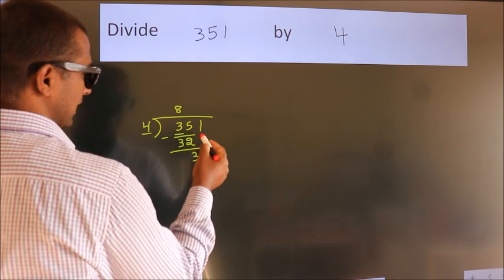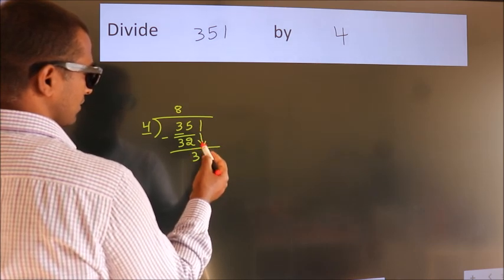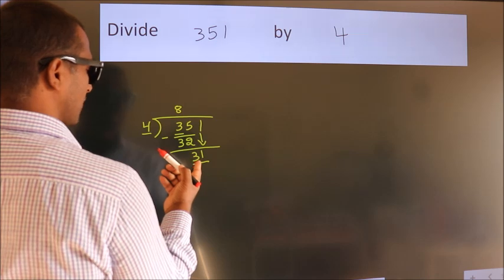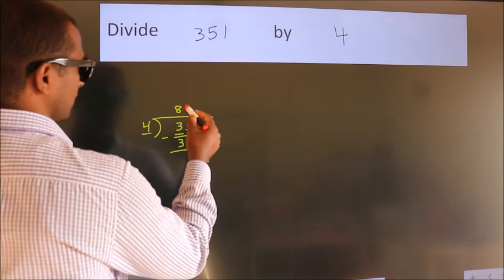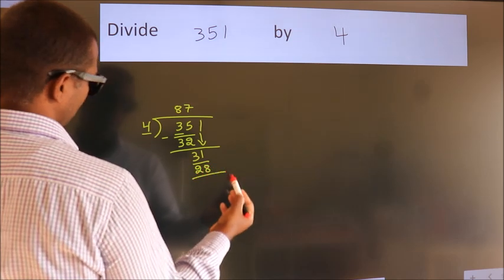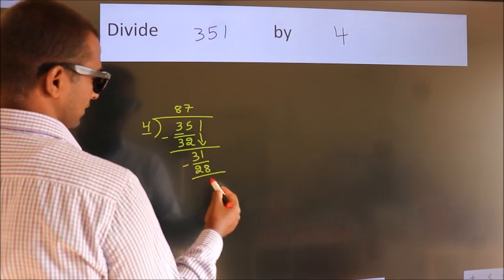After this, bring down the beside number. So, 1 down. 31. A number close to 31 in the 4 table is 4 times 7, 28. Now we subtract. We get 3.